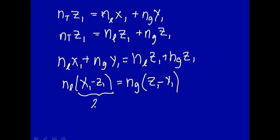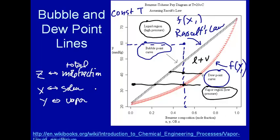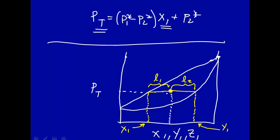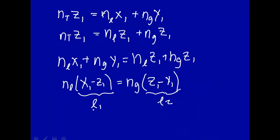We'll call this l1 and this l2. x1 minus z1 — we said we started out with z1 here, so x1 minus z1 is l1, and z1 minus y1 is l2. So what we end up with is the total number of moles in the liquid phase times l1 equals the total number of moles in the gas phase times l2. And this is called the lever rule.